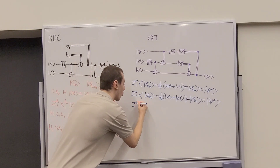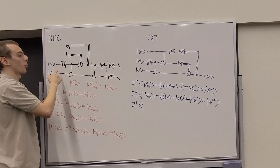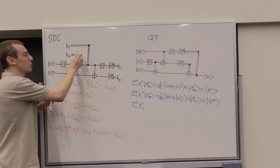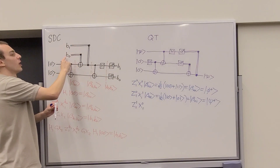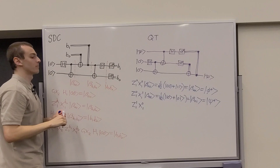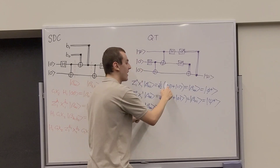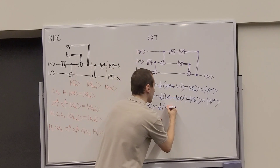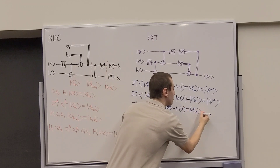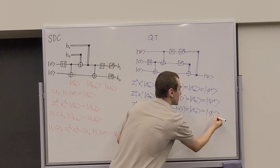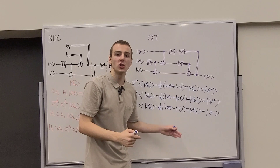Case b1=1, b0=0: only the phase flip Z is applied to qubit 1. This introduces a minus sign on the |1⟩ component, producing (1/√2)(|0,0⟩ - |1,1⟩) = β₁₀ = |φ⁻⟩. This is similar to |φ⁺⟩ but with a relative phase of minus one between the two kets in the superposition.